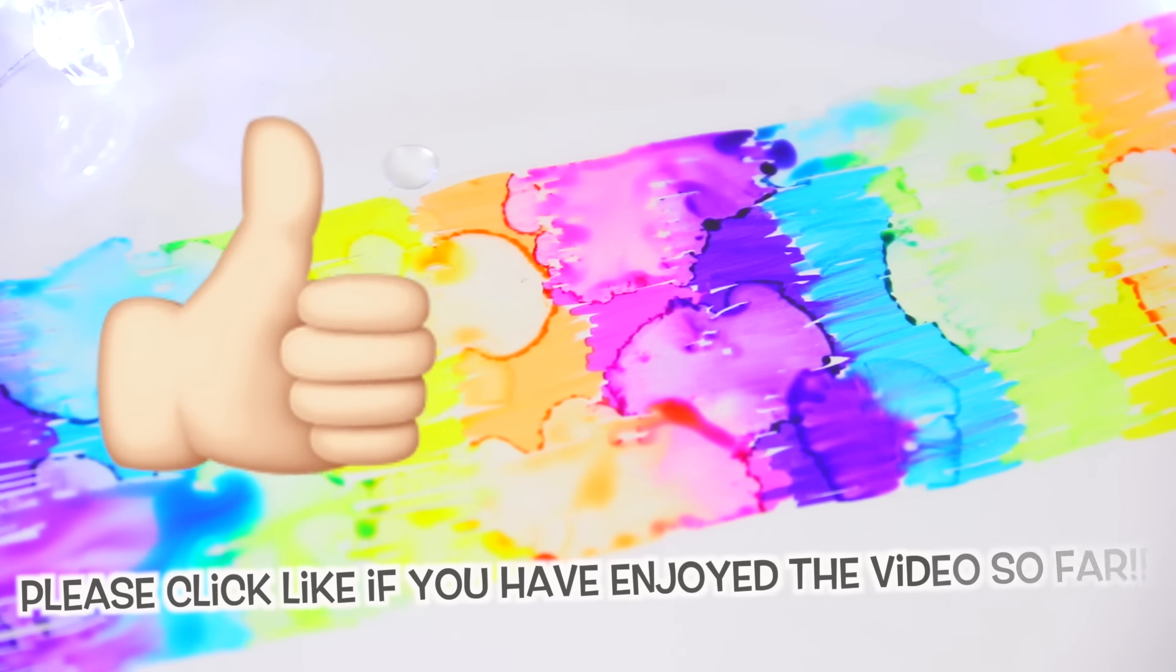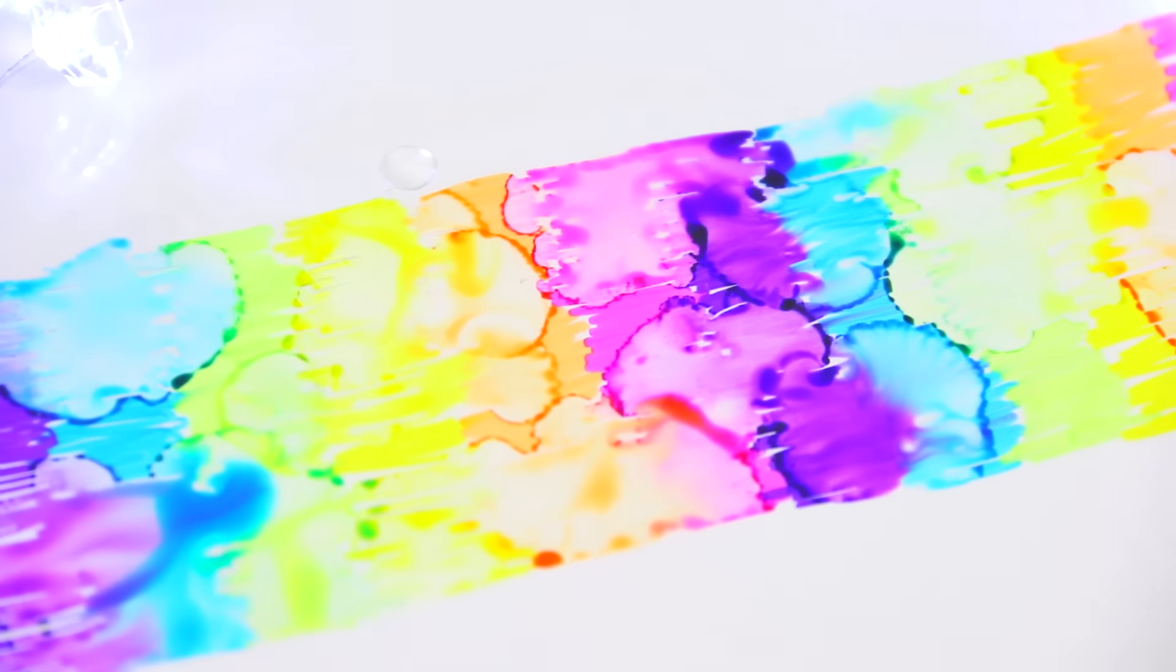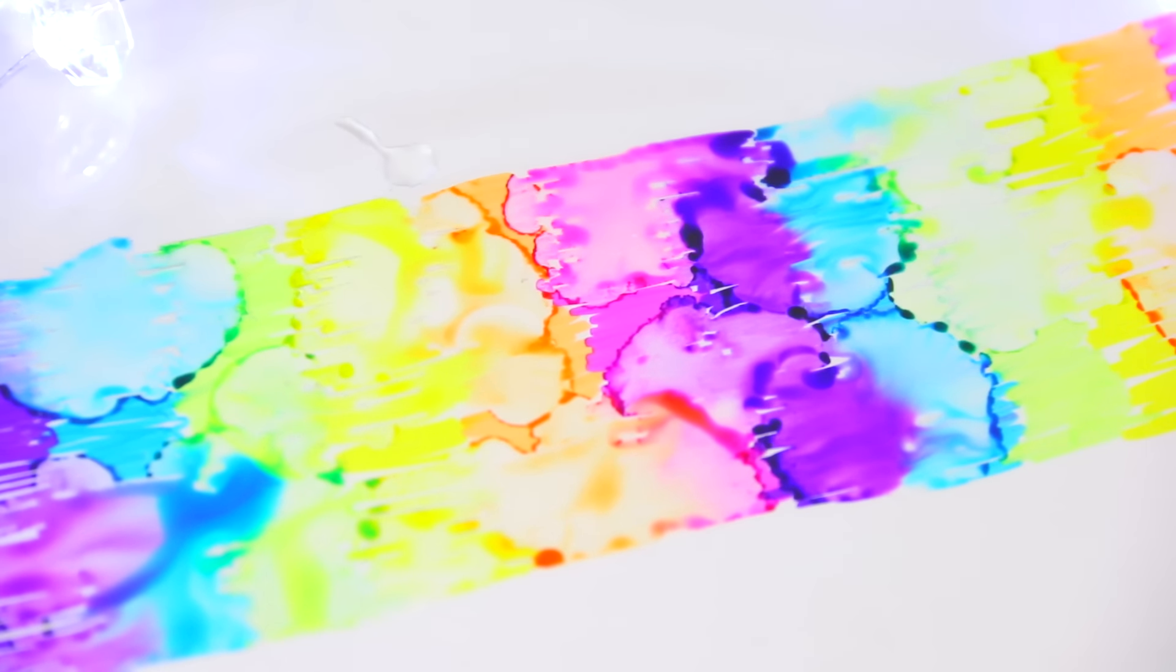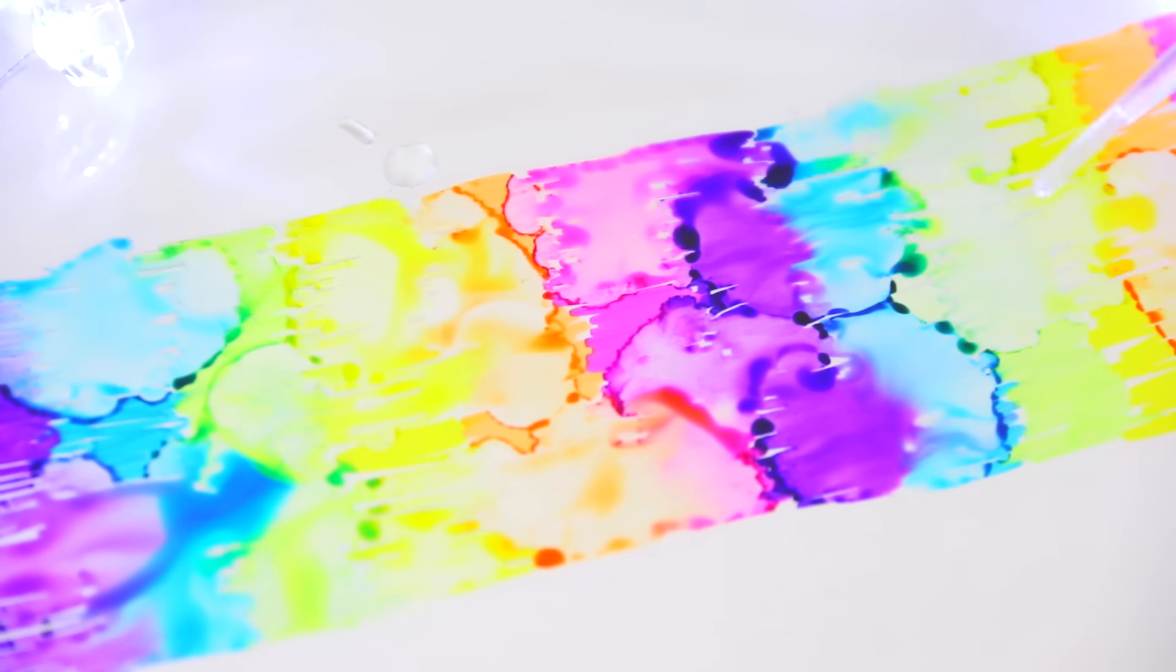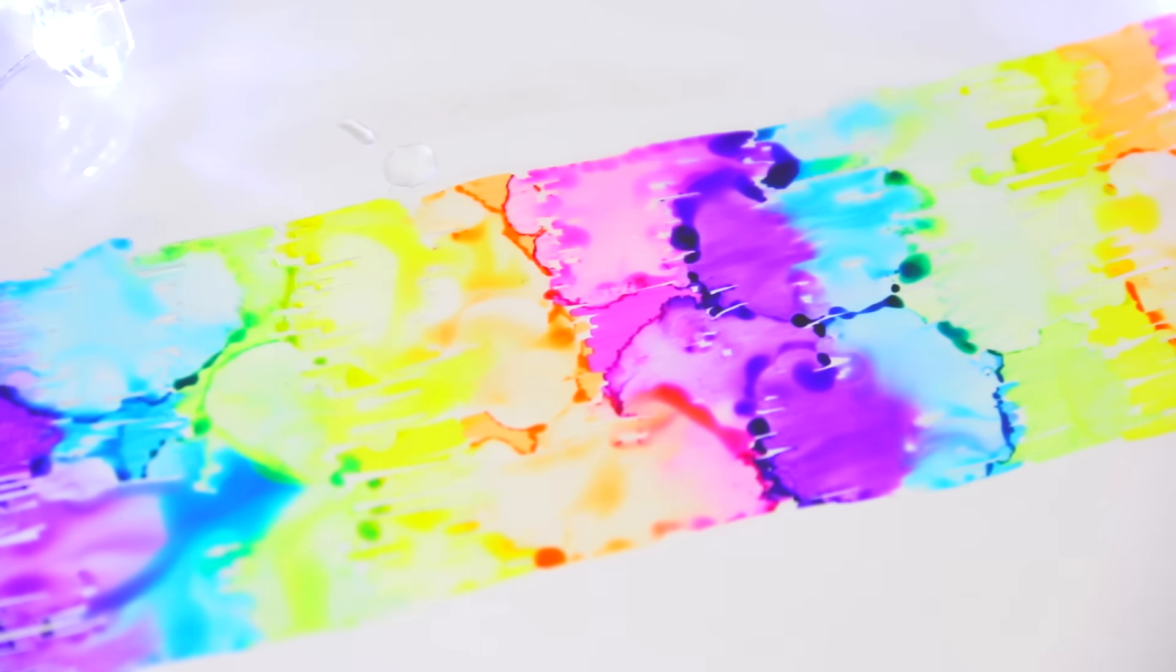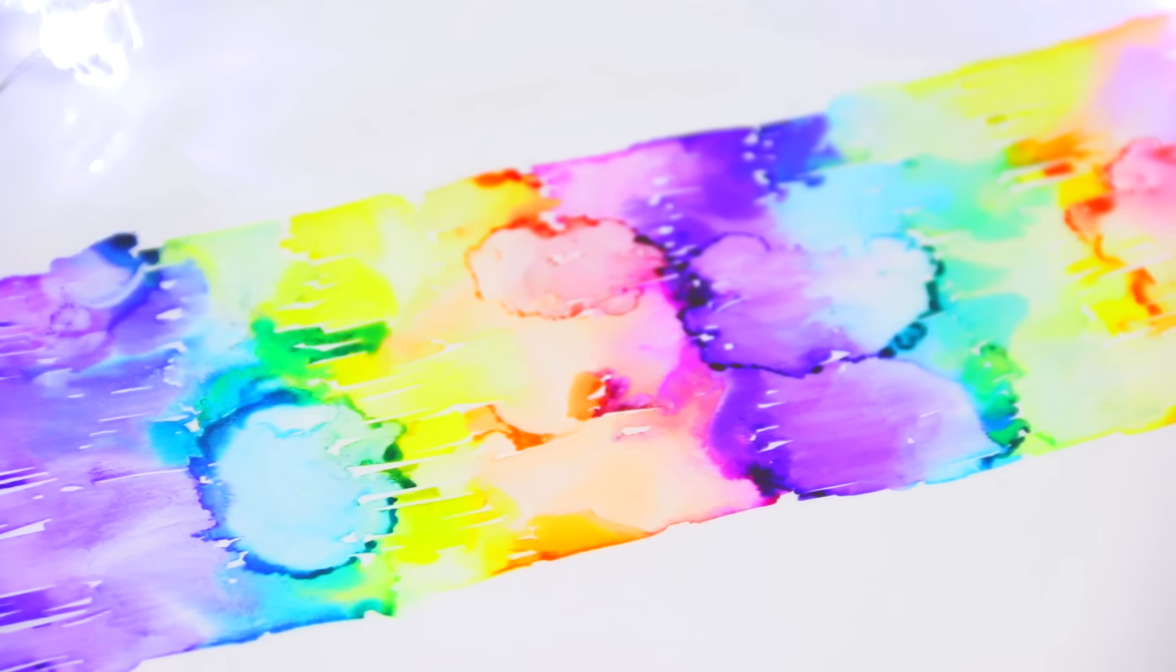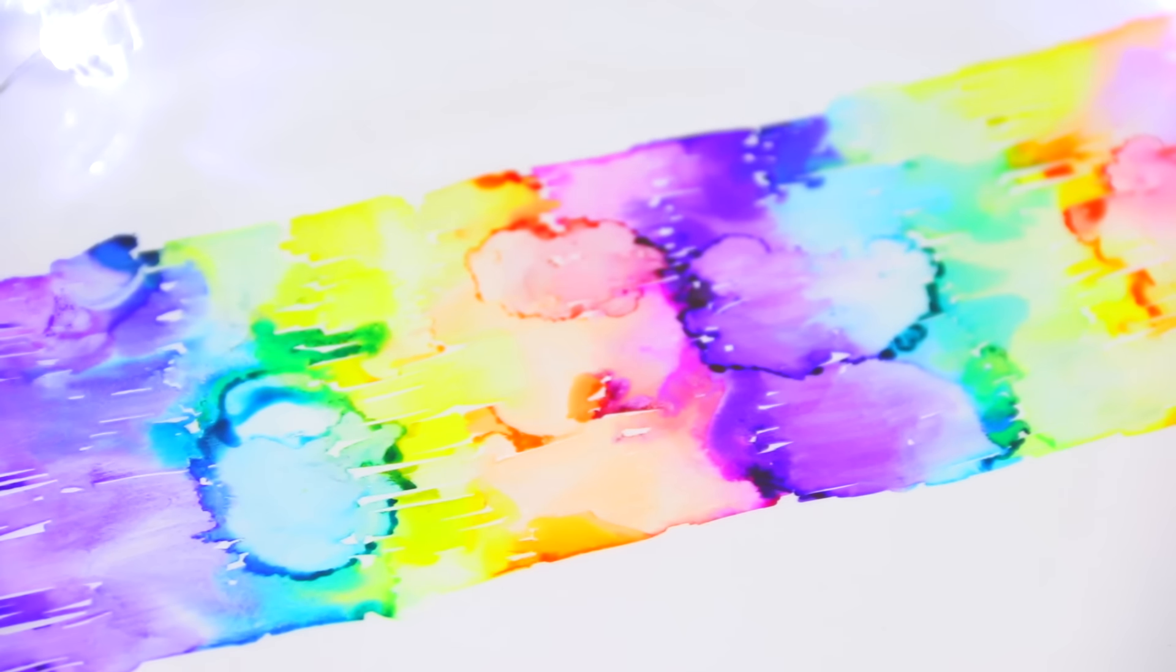So just put a little bit of alcohol at a time, drip it one by one all over. And then once you let it dry a little, you can go back in with more drips and just do little tiny drips over those. And it'll create different effects where you see the drips overlap.